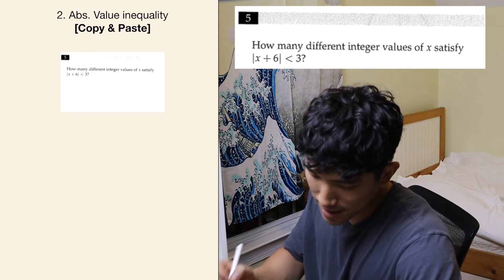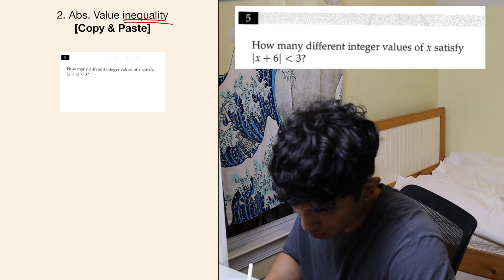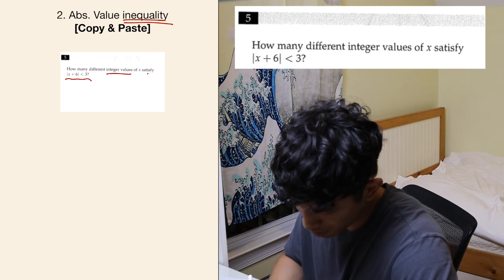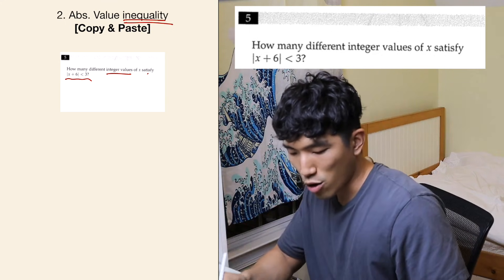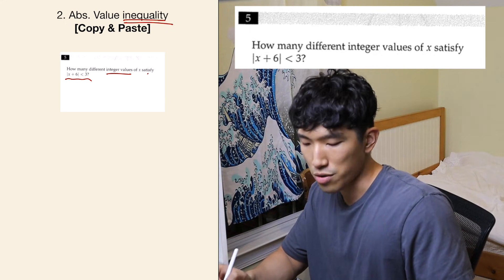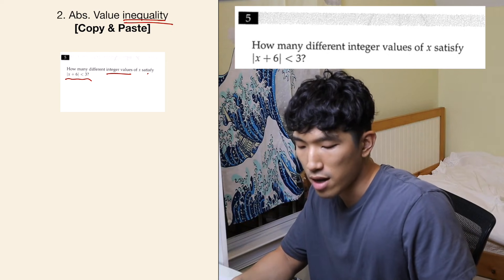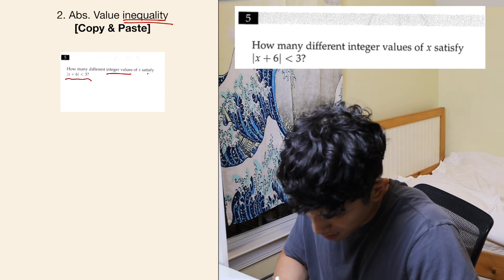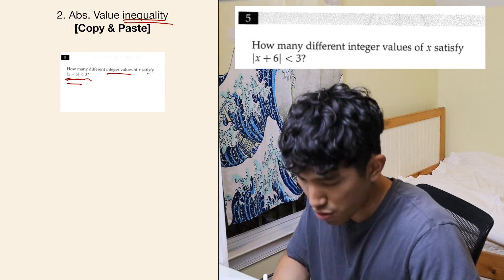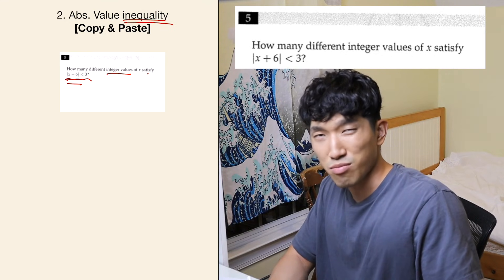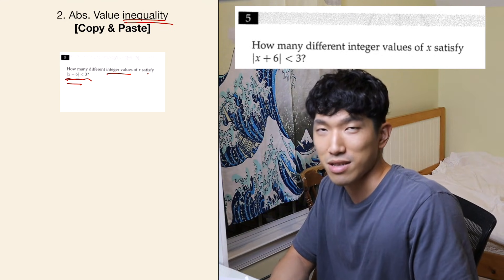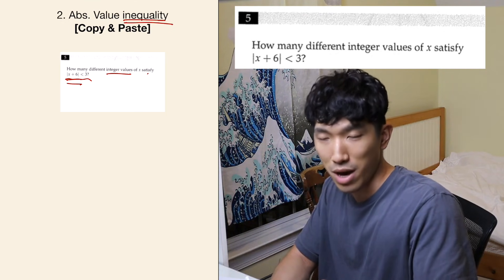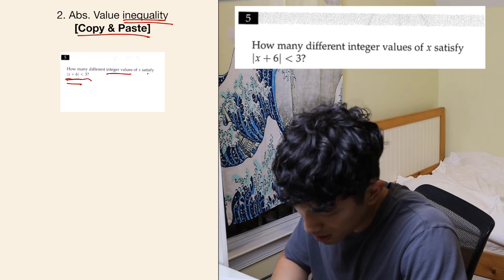The second type is the inequality question: how many different integer values of X satisfy this inequality? Instead of finding one value of X, we're looking for how many different numbers work. This is really when the copy and paste method comes in handy because this one's a little more complicated. We want the left side to be less than three — so as long as it's less than three, it works. There are probably a few values that work, and if you leave one or two out, you'll get the question wrong. So you want the most accurate way, which is the copy and paste method.